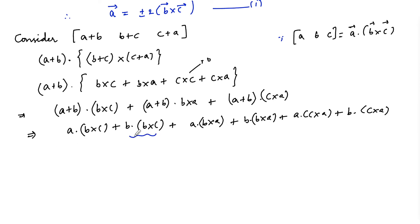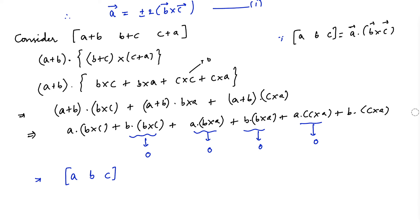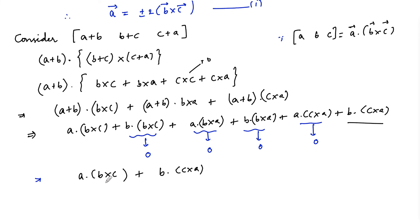Here b·(b×c) has two equal vectors b, so it is 0. Similarly a·(b×a) = 0, b·(b×a) = 0, and a·(c×a) = 0. We are left with a·(b×c) + b·(c×a). Using the cyclic property: [b,c,a] = [a,b,c], so b·(c×a) = a·(b×c).